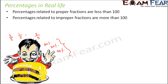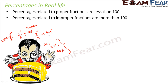One interesting thing you will always observe is that percentages related to proper fractions are less than 100. Proper fractions are those where the numerator is less than the denominator — for example, 3/5, 1/5, and 2/5. When you convert them into percentages: 2/5 is 40%, 1/5 is 20%, 3/5 is 60%. So their percentages are all less than 100.